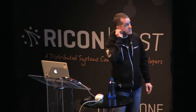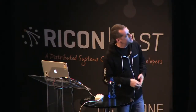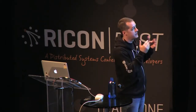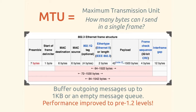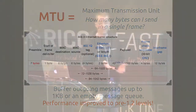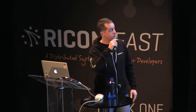We researched the maximum transmission unit — basically how many bytes you can send in a single frame on the wire, including all IP and TCP overhead. An Ethernet frame allows about 1500 bytes in the payload, with a minimum of 42 bytes. So you don't want to send something less than 42 bytes if you can avoid it. Our solution was to buffer all outgoing messages up to one kilobyte or so, and then if we don't have any more MapReduce messages coming in, flush the buffer to the TCP driver. Our performance improved to pre-1.2 levels.